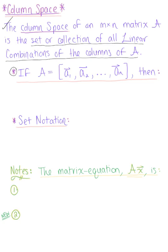If matrix A is defined by the set of column vectors A sub 1 through A sub N, then the column space of matrix A is equal to the span of these vectors, A sub 1 all the way up to A sub N. It is the collection of all possible linear combinations.